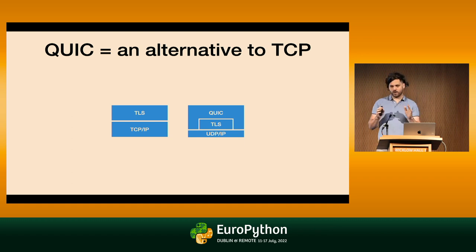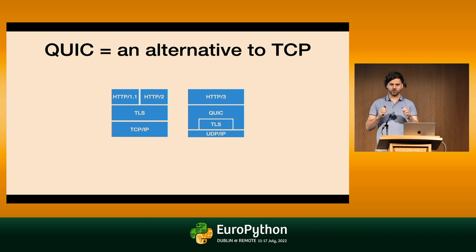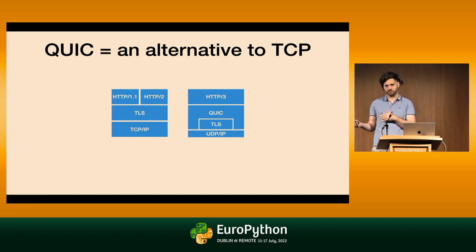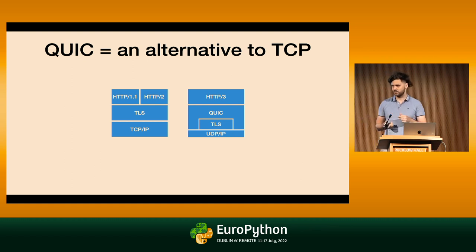Getting back to HTTP: HTTP/1 and HTTP/2 use TCP with TLS for transport. HTTP/3 uses QUIC, meaning UDP. Besides that, it's quite similar to HTTP/2.